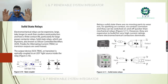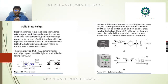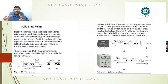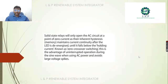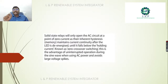Solid state relays are electronic alternatives to electromagnetic relays — they are more compact and faster. These solid state relays use thyristors such as SCRs (silicon controlled rectifiers) and TRIACs (triode for alternating current). The output devices — SCR, TRIAC, or transistor — are optically coupled to an LED. This solid state relay will only open the AC circuit at a point of zero current, known as zero crossing switching.